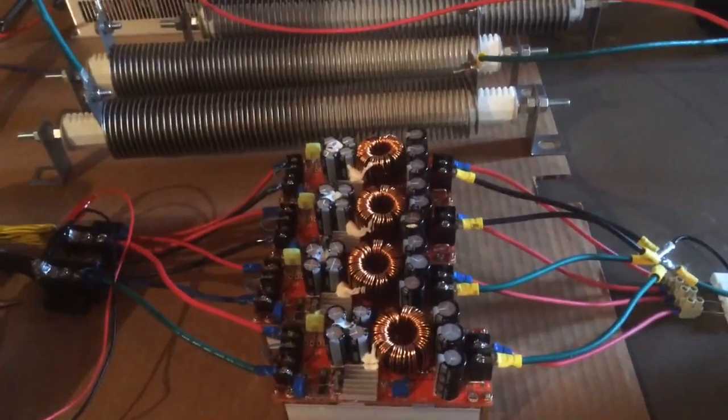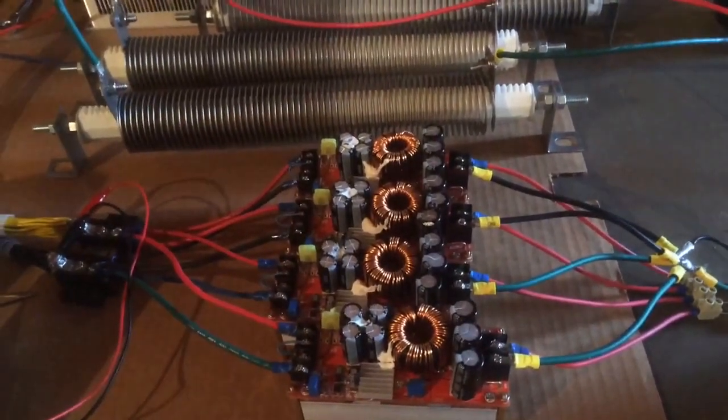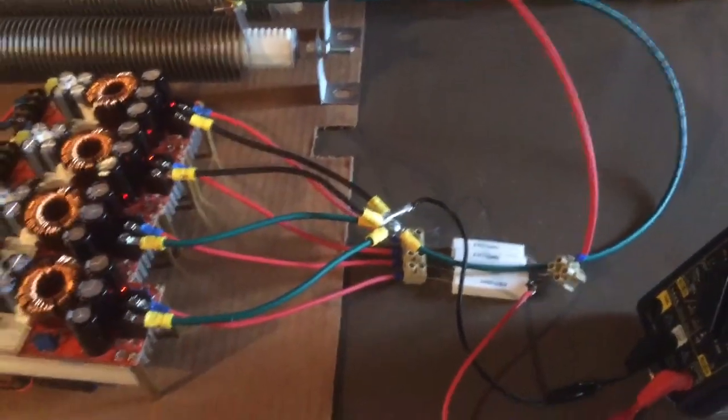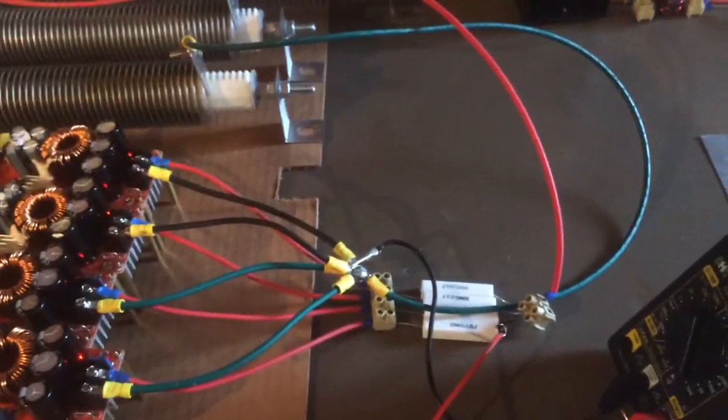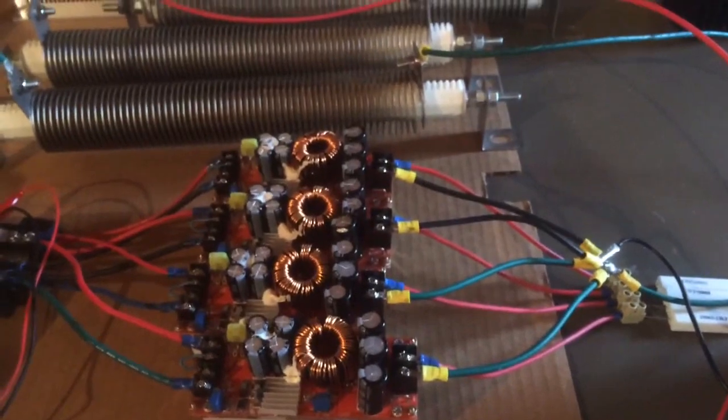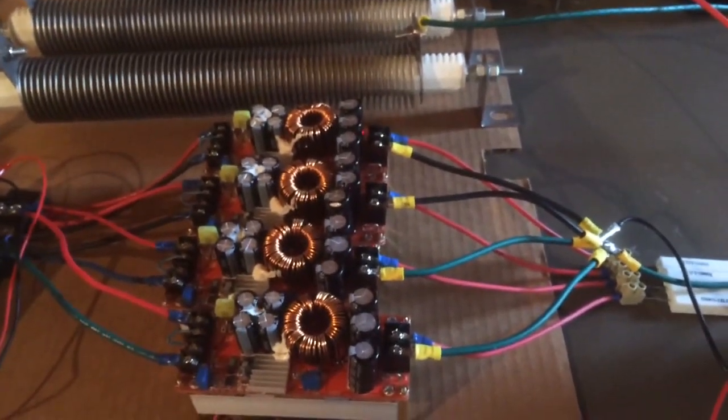These are about twenty dollars each on eBay so looking at eighty dollars total for the four converters and maybe another ten dollars for the resistors and some of the other miscellaneous components.